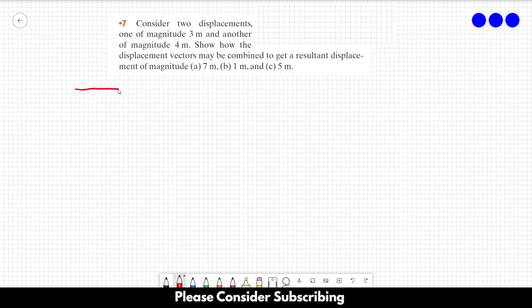Let's say that this one is our first displacement, let's call it vector A, and this is our second displacement, so it's longer, let's call it vector B.